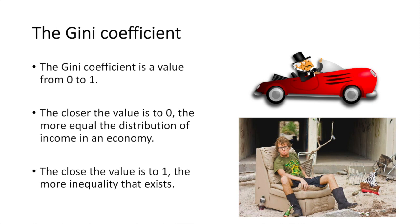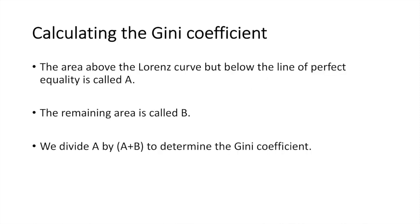We use the Lorenz curve to calculate the Gini coefficient. If the Gini coefficient is equal to 0, then we have perfect equality in society. However, as the Gini coefficient approaches the value of 1, inequality is higher. We look at the area above the Lorenz curve but below the line of perfect equality — that's called A. The remaining area is called B. So we divide A by A plus B to determine the Gini coefficient.